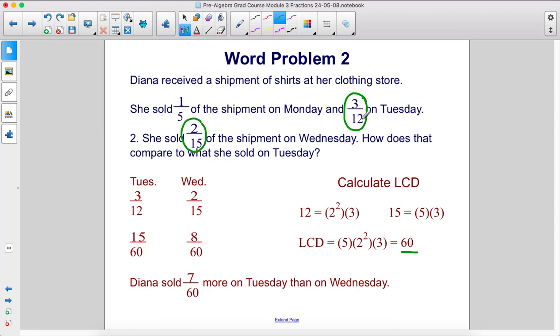Now, we've already converted 3 twelfths to be out of 60. Remember, 3 twelfths was 15 over 60. So now we just need to convert 2 fifteenths into something over 60. We're going to multiply top and bottom by 4, because 15 times 4 is 60, 2 times 4 is 8. So Diana sold 7 out of 60 more on Tuesday than on Wednesday, because we just take that 15, subtract the 8, we get 7.